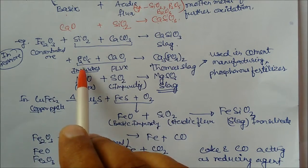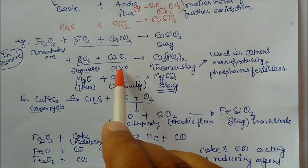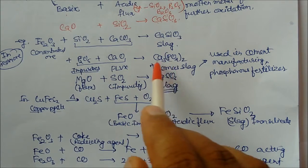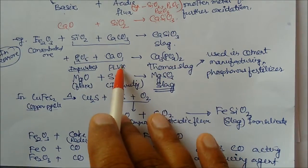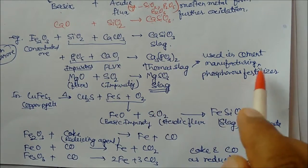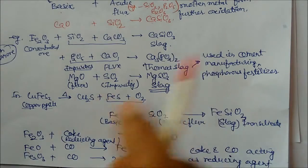Again, this ore contains P2O5. So here you add flux. So flux will combine with this impurities, you will get thermosaline. This calcium phosphate is called thermosaline. It has another advantage. It can be used in cement manufacturing and phosphorus fertilizer. Sometimes questions are asked from here also.